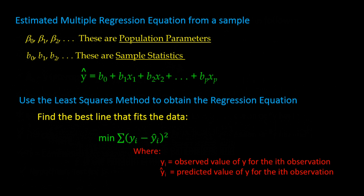Yi represents the observed value of y for the i-th observation and y-hat represents the predicted value of y for the i-th observation. We have two values: the observed value from the sample and the predicted value from the y-hat line of regression. The line that fits the data the best is the one that minimizes the squared differences of each observed Yi value from its predicted y-hat value. It is the distance from each dot on the scatter diagram to the line of regression, both above and below that line.